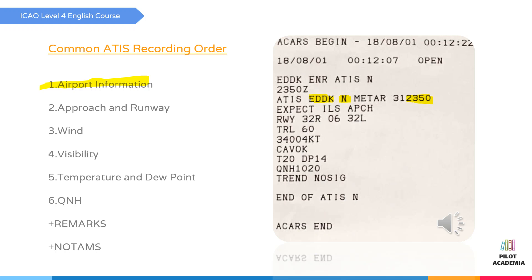The second part is the approach and runway information, identified here as ILS approach, runways 32 right, 06, and 32 left. The second portion of the ATIS recording generally includes the advertised instrument approach or approaches in use at the airport. For example, it may be recorded as 'simultaneous ILS approaches in progress to runways 25 left and 24 right.' This portion may sometimes be located in the last section of the ATIS, so we need to keep that in mind.